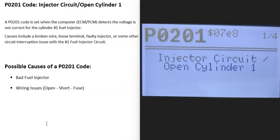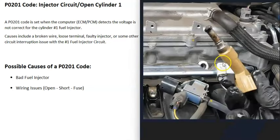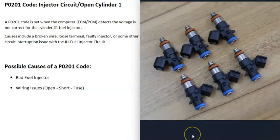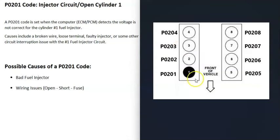Today I'm talking about a P0201 code — what it is and how you go about fixing it. A P0201 code is an injector circuit open on cylinder one. Each cylinder on the engine has a fuel injector that injects fuel into the cylinder, and this code means the computer is seeing some kind of problem with the injector on cylinder one. A P0202 would be cylinder two, P0203 cylinder three, and so on.